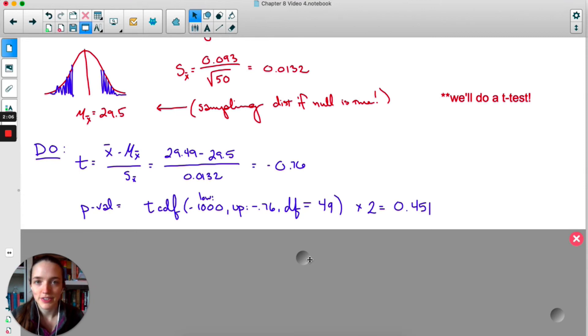So I'm going to use tcdf to find the area under the curve, lower negative 1000, upper negative 0.76. And then remember for tcdf, it asks you for degree of freedom. Our sample size was 50, so degree of freedom is 49. And then notice I'm multiplying this by 2 because I'm interested in both tails. So we get a p-value that is quite large, 0.451.